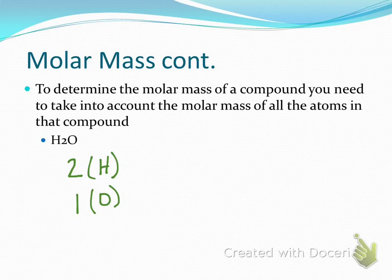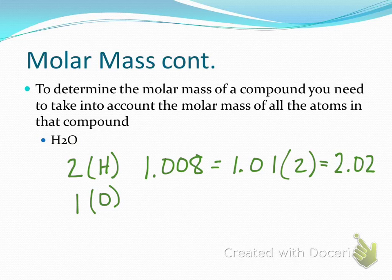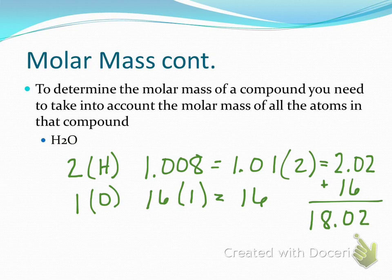Hydrogen has a molar mass of 1.008 — I'll round to 1.01 — and there are two of them, so I take that times two. That gives 2.02 grams per mole for the hydrogen portion. I have one oxygen atom, which I'll round to 16 (it's 15.999). I take that times one because I only have one oxygen atom. My final step is to add those two together. The molar mass of water is 18.02 grams per mole.